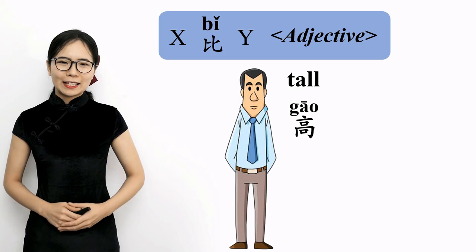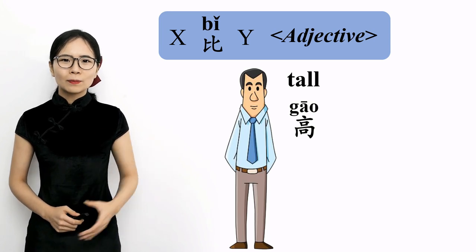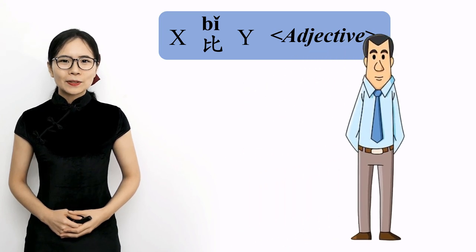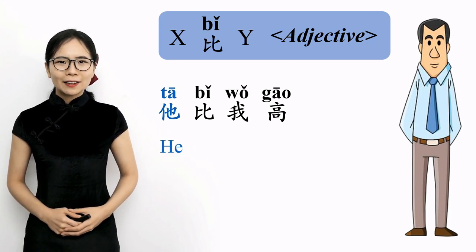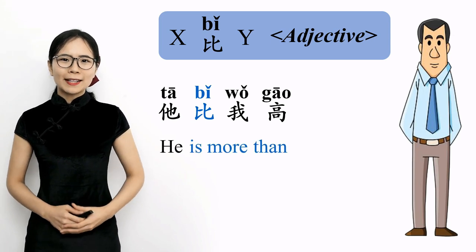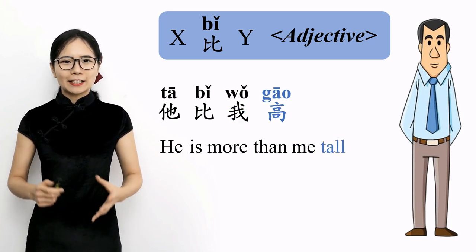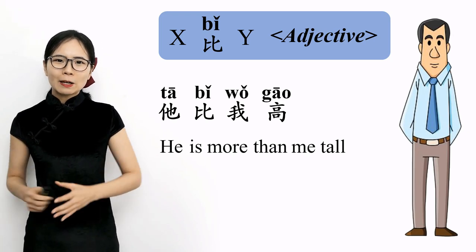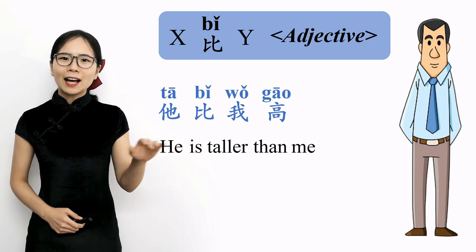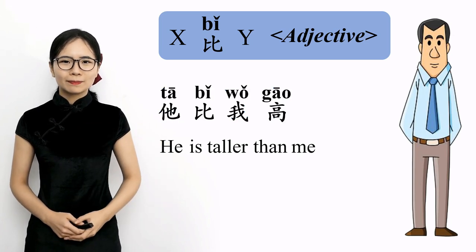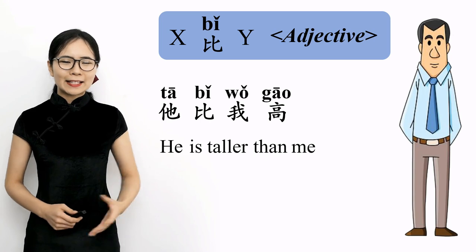Let's look at some examples. The Chinese word for tall is 高. Please repeat after me: 高, 高, 高 — tall. To say 'he is taller than me,' we say 他比我高. 他 means he, 比 means is more than, 我 means me, and 高 is an adjective meaning tall. Literally, 'he is more than me tall.' In other words, he is taller than me. Please repeat after me: 他比我高. 他比我高 — he is taller than me.